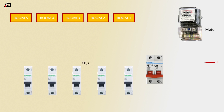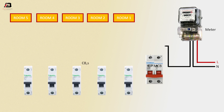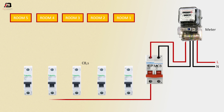Phase connection input to energy meter. Neutral connection input to energy meter. Neutral connection from energy meter to connect double pole MCB. Phase connection from energy meter to connect double pole MCB circuit breaker. Phase connection from double pole MCB to connect all circuit breakers.